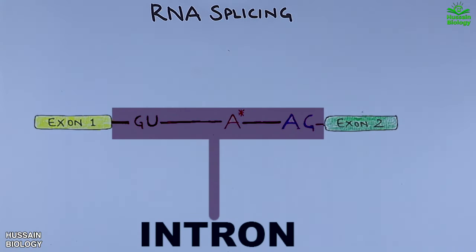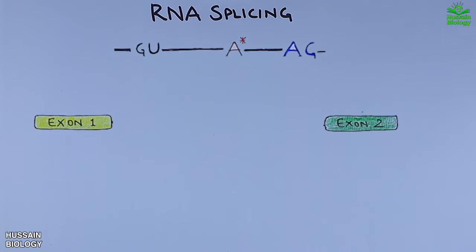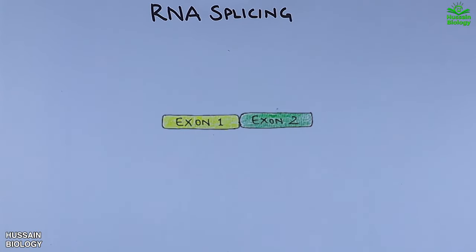If this is the pre-mRNA molecule with introns in the middle, then we splice the introns out and join the exons together. So this is RNA splicing in simple sense.